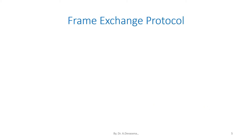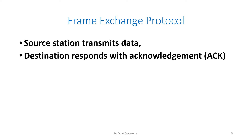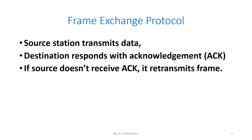In the frame exchange protocol, the source station transmits data. The destination responds with an acknowledgement, that is ACK. If the source does not receive ACK, it retransmits the frame.